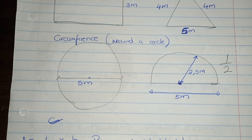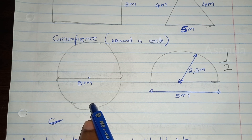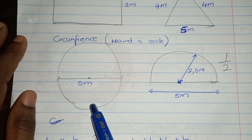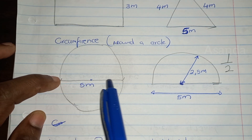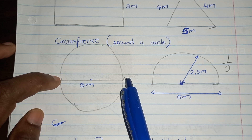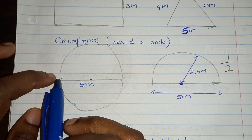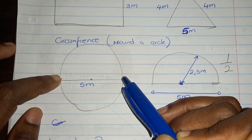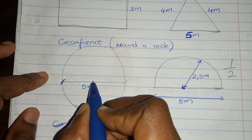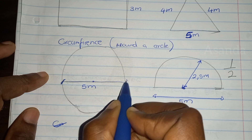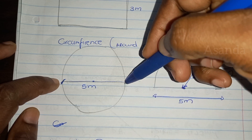A circumference is the total distance around a circle — going all the way around back to where we started. Now, the important thing to note with a circle is that it has a diameter, which is very important when we are using circles and making calculations. The diameter is the distance from the beginning, across the center, all the way to the end of a circle.